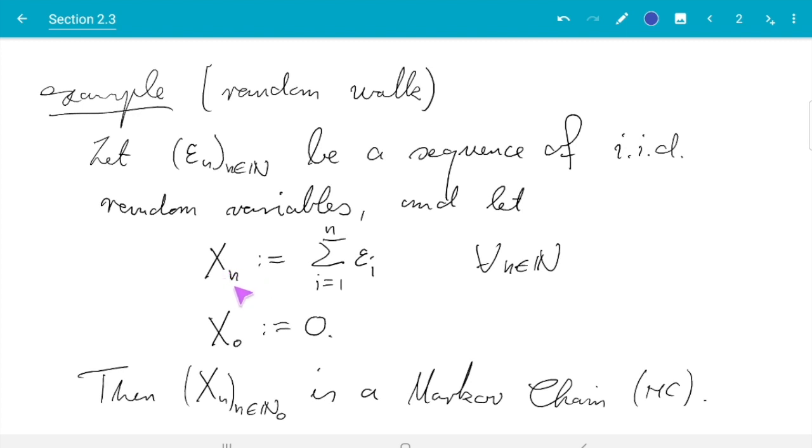Let's have a look why this is true. We need to check that knowing the past beyond the previous step does not change the distribution of the next step - that is what the definition says. So we need to check knowing Xn is all we need to know to understand the distribution of Xn+1, and that is quite easy.